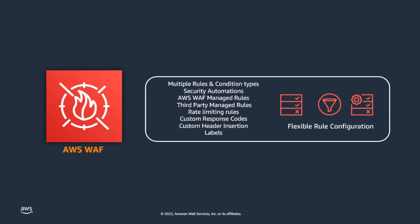Quickly get started using managed rules for AWS WAF, which include pre-configured rules for protection against common exploits. You can customize an existing rule or create your own rules to filter out specific traffic patterns based on HTTP headers, geolocations, IP reputations, or frequency of requests.